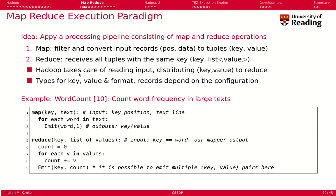Hadoop takes care of reading the input files and distributing the key-value pairs that are produced from a Map step to the Reduce function. You can configure in a job what types of key and value you would like to have, what kind of file formats you have, and so on. Then you trigger a Map and Reduce operation.